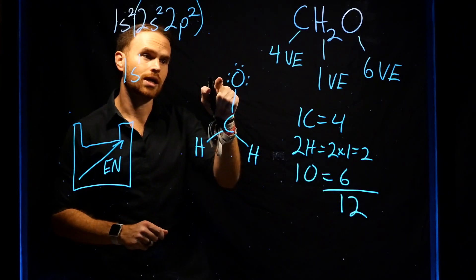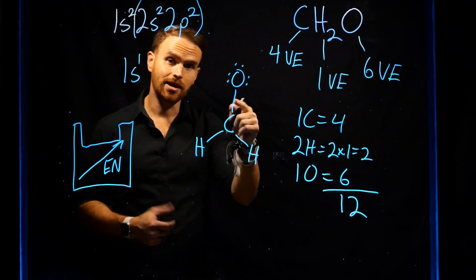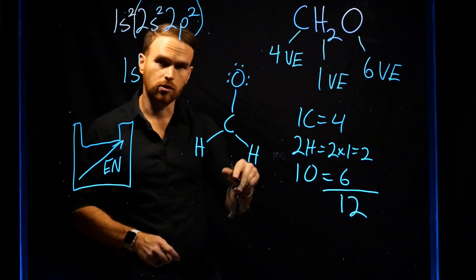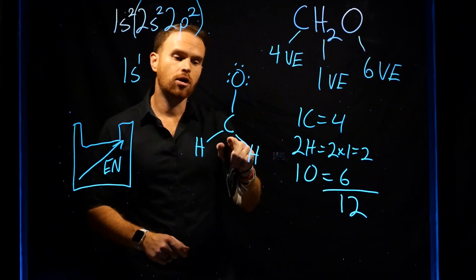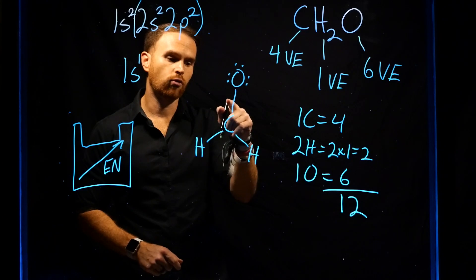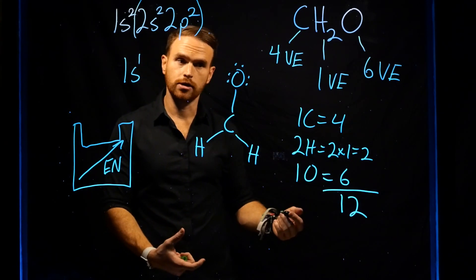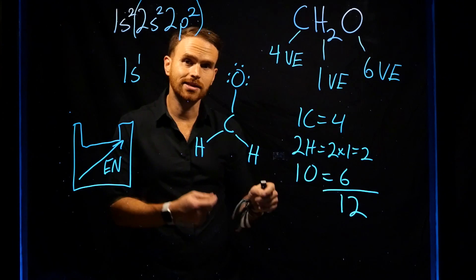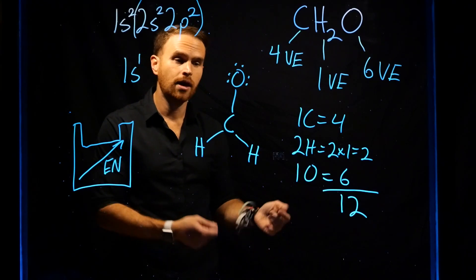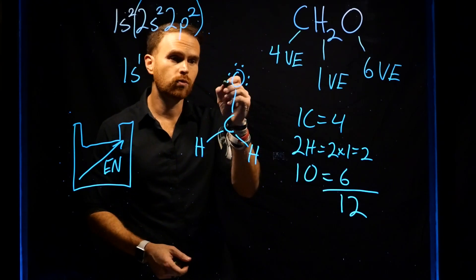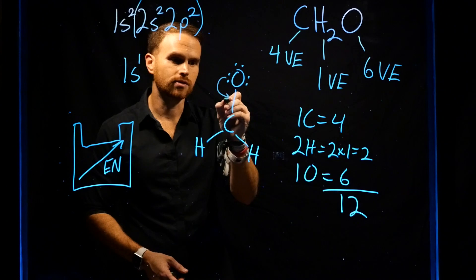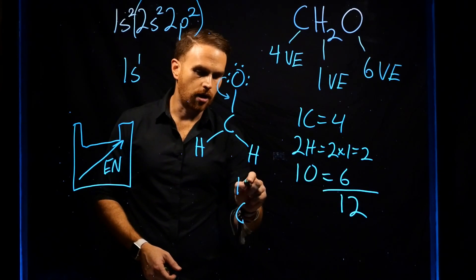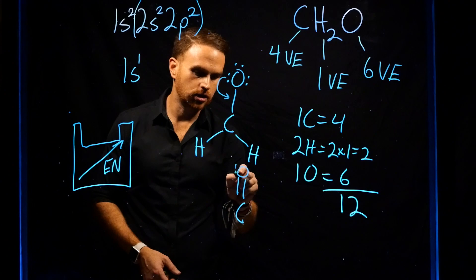Now oxygen has two, four, six, eight electrons around it. The hydrogens only need two, so those are satisfied. But carbon only has two, four, six electrons around it. So even though we've used all 12, carbon has not satisfied the octet rule. Therefore, we'll take two of these electrons and move them to create a double bond on the oxygen to carbon.